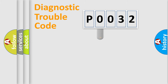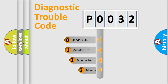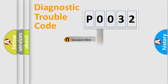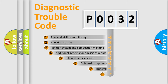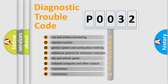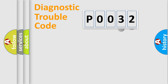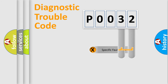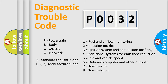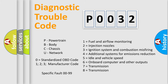This distribution is defined in the first character of the code. If the second character is expressed as zero, it is a standardized error. In the case of numbers 1, 2, or 3, it is a more specific expression of a car-specific error. The third character specifies a subset of errors. The distribution shown is valid only for the standardized DTC code. Only the last two characters define the specific fault of the group. This division is valid only if the second character code is expressed by the number zero.